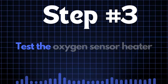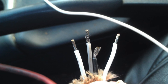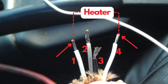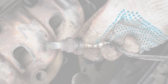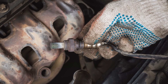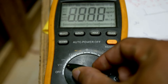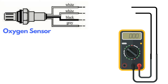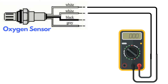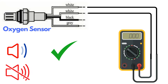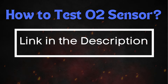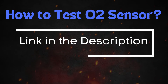Step 3: Test the oxygen sensor heater. Oxygen sensors typically have four wires, and two of these — usually the same color — are dedicated to the heater circuit. Over time, the heater circuit can burn out and stop functioning properly. To test it, you'll need a multimeter. Set the multimeter to check for continuity, then place the probes on the two heater wires. If the circuit has continuity, the multimeter will beep, indicating that the heater is functioning. If there's no beep, the heater circuit is broken and you'll need to replace the oxygen sensor. For a more detailed guide on how to test the oxygen sensor, check out our in-depth video on this topic.